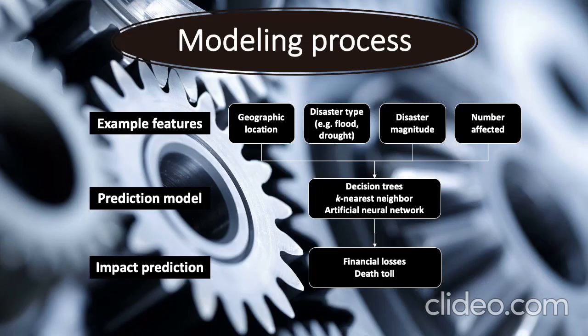As a graphical overview of the modeling process, we'll take example features like geographic location, disaster type, disaster magnitude, and the number of people affected, and plug it into a prediction model like decision trees or k-nearest neighbor. From there, we'll make an impact prediction, which would be financial losses or death toll.